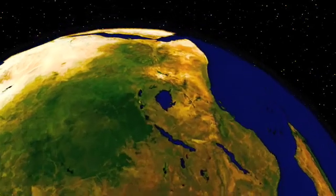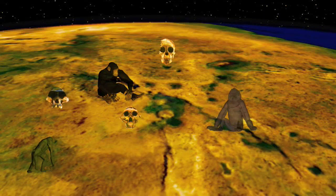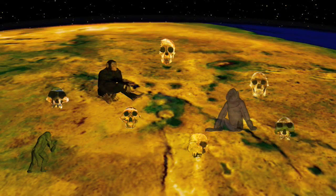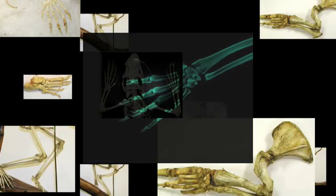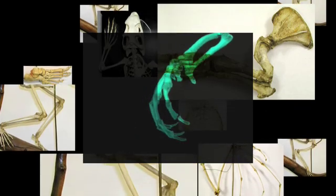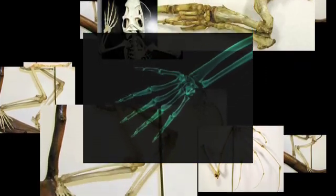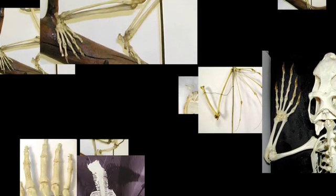Humans' closest living relatives are the great apes, indigenous to Africa, so it is no real surprise to find that our own origins are there as well. If species evolve from another species, the new species must often adapt and modify existing body parts to do different tasks.